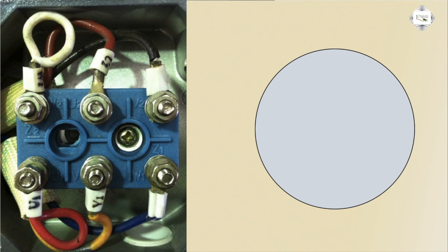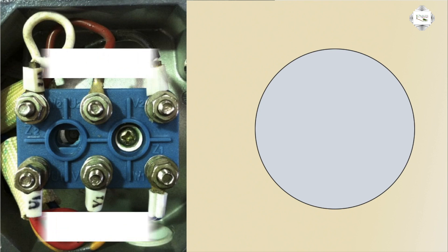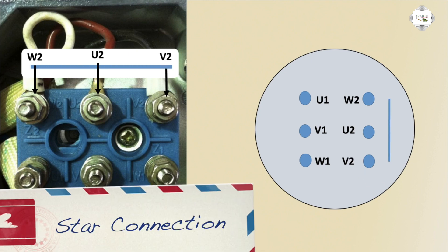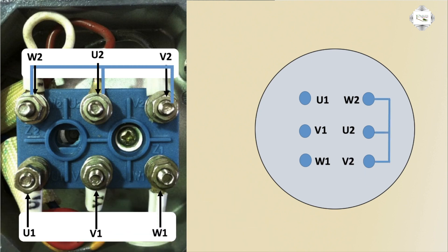This is the terminal arrangement: U1, V1, and W1, then W2, U2, V2. When I short the secondary terminals U2, V2, and W2, this is a Star connection. And first terminals U1, V1, and W1 connected to three-phase supply. This is a Star connection.